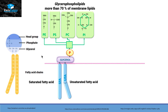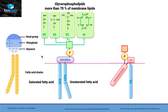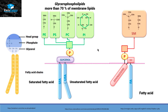The remaining 30 percent includes another kind of lipid. It has a fatty acid chain attached with a compound called sphingosine. This sphingosine is attached with phosphate, and this phosphate has a head group that can be choline or ethanolamine.